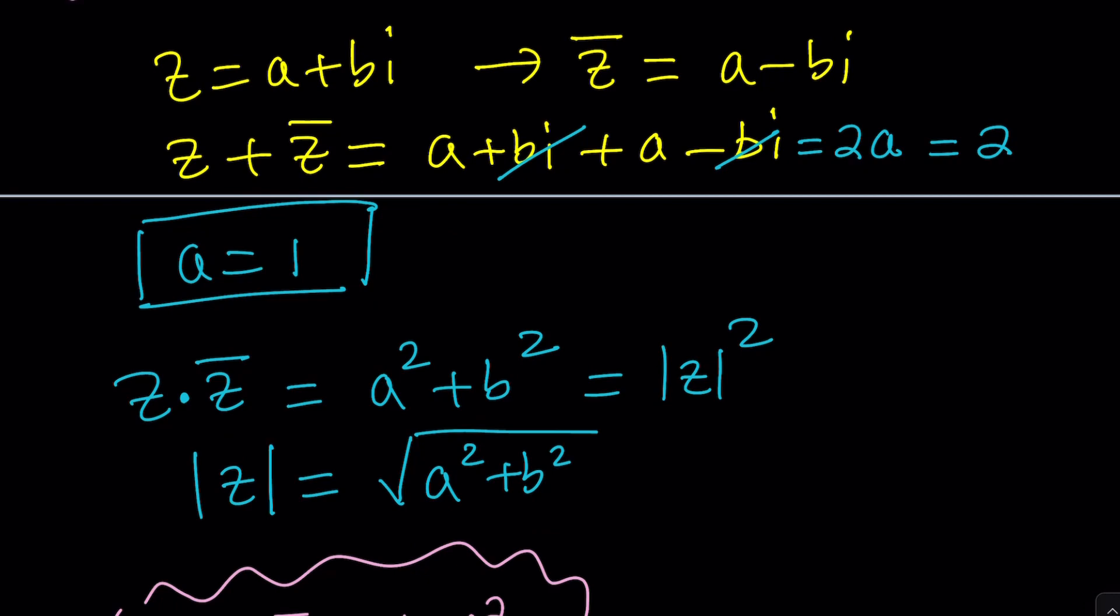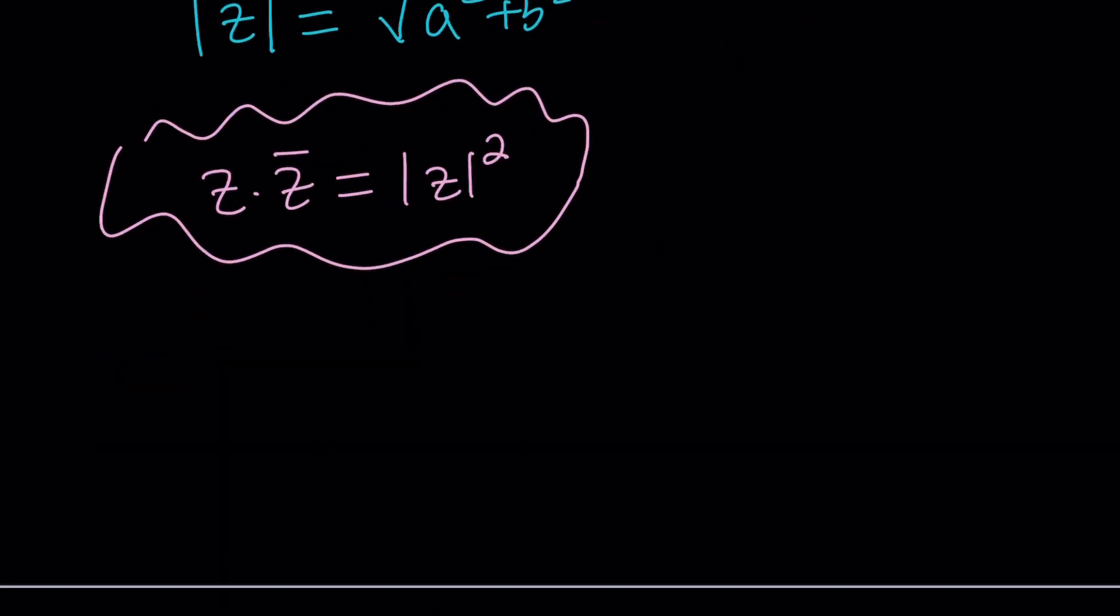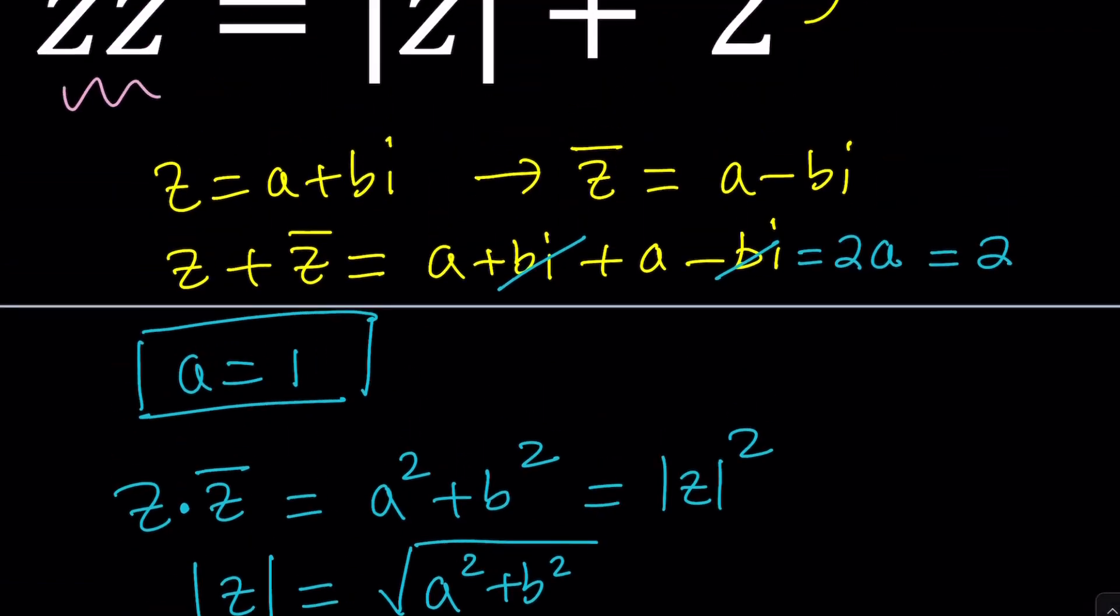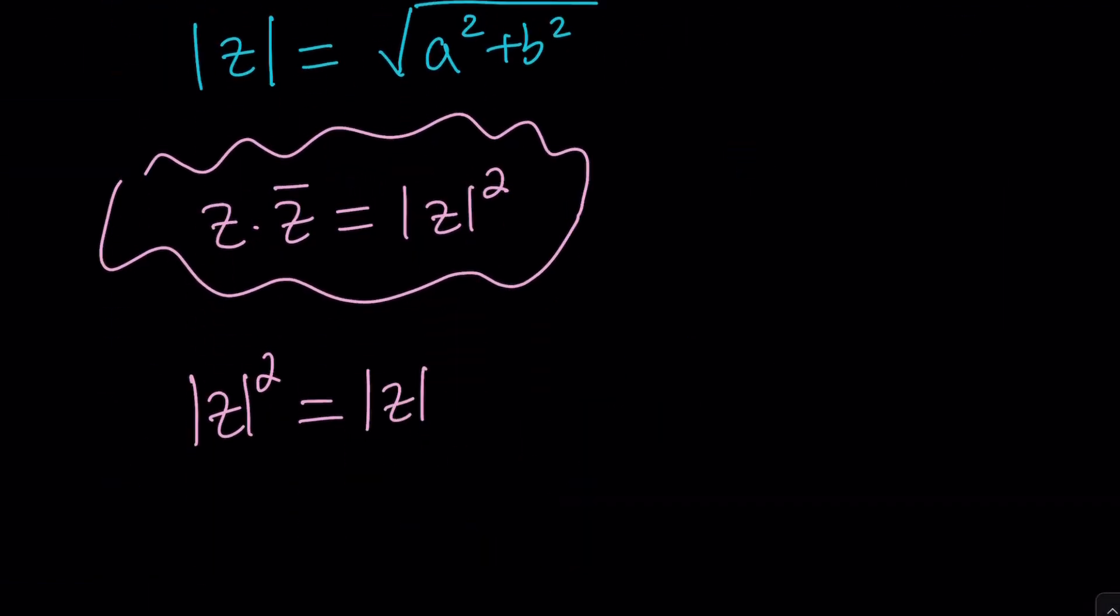We can basically go ahead and replace the z times z bar with absolute value of z squared in the second equation. So this is going to be absolute value of z squared and that's going to equal absolute value of z plus 2. In other words, we go from an equation with so many unknowns to an equation with a single unknown, which is the absolute value of z. So let's go ahead and solve for absolute value of z here. You can call it R if you want. This gives us R squared equals R plus 2.